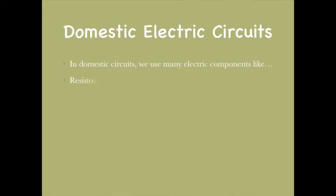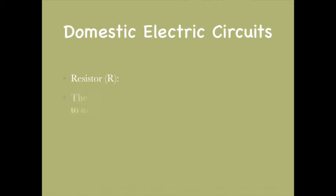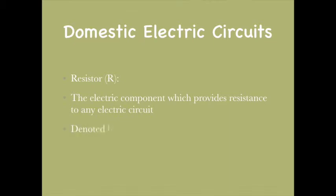Now let's move on to domestic electrical circuits. In a domestic circuit, we use many electrical components such as resistors, capacitors, inductors, diodes, amplifiers, transistors, and more. Let's start with the resistor: a resistor is an electrical component which provides resistance to the electrical circuit, denoted by R, with units in ohms (Ω).